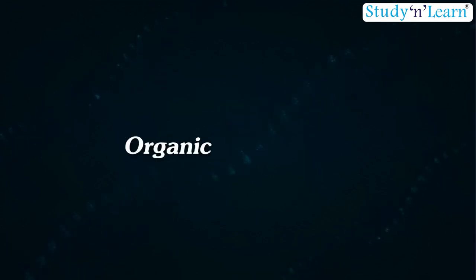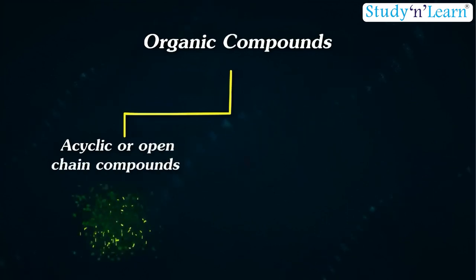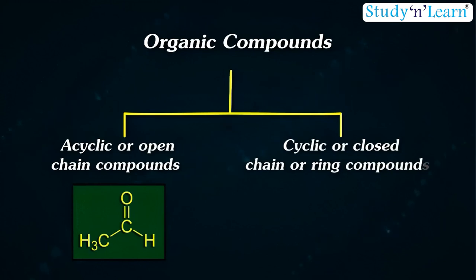Organic compounds are broadly classified as shown. Organic compounds are divided into two parts: 1. Acyclic or open-chain compounds and 2. Cyclic or closed-chain or ring compounds.